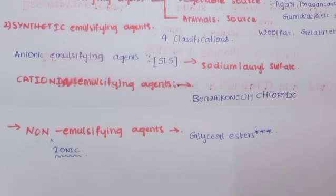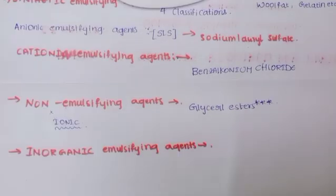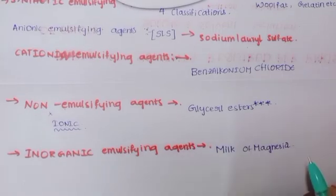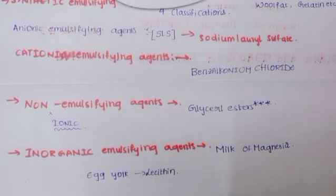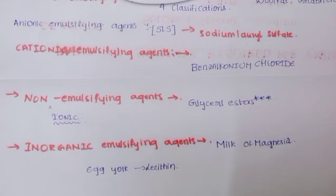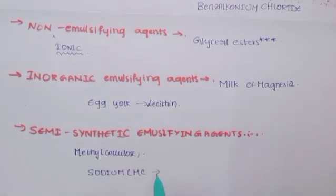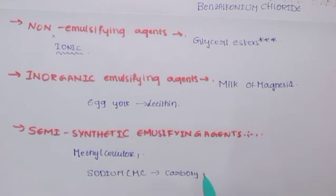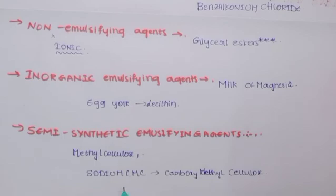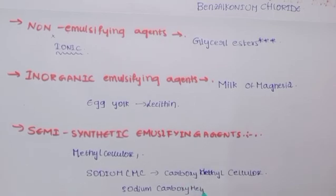The fourth classification is inorganic emulsifying agents. Examples include milk of magnesia, and the most important example is egg yolk — which contains lecithin. The third major type is semi-synthetic emulsifying agents, which are neither completely natural nor completely artificial — they are in between. Examples include methyl cellulose and sodium CMC, where CMC stands for carboxymethyl cellulose, so the full name is sodium carboxymethyl cellulose.